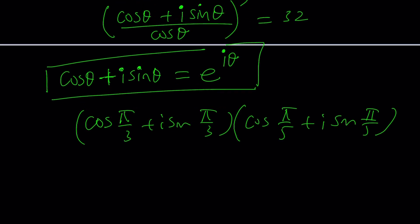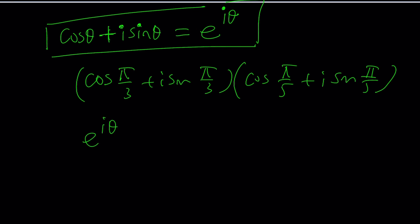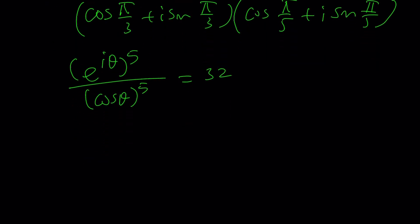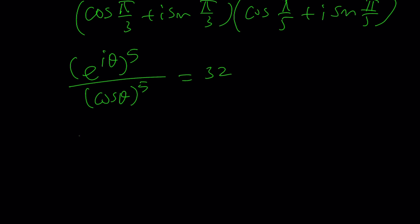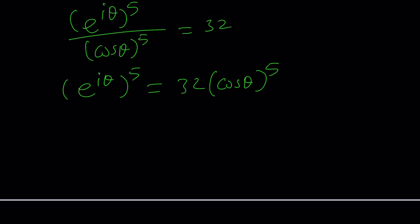Now that gives us the following. E to the i theta, and let's separate these now. Cosine theta to fifth equals 32. I can put the cosine theta on the right hand side. Now assuming that cosine theta is real, I can take the fifth root of both sides. But again, we've got to be very careful.